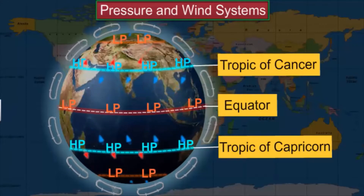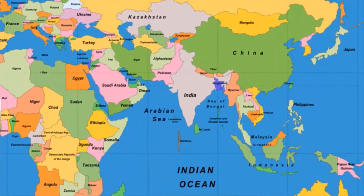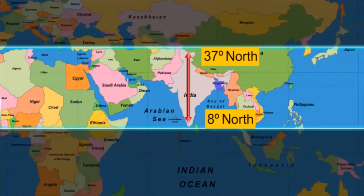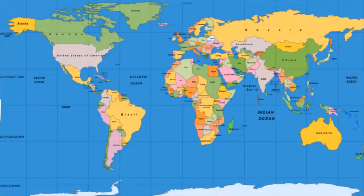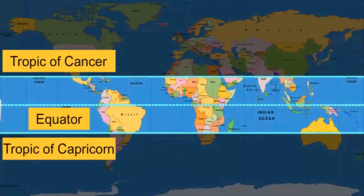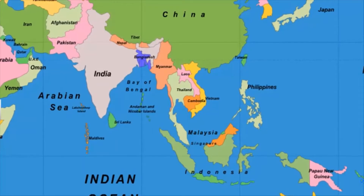India is situated approximately between 8 degrees north and 37 degrees north latitude. It falls under the tropical region, which is the belt between the two tropics. Predominantly, the climate of places located in the tropical region is hot and humid. Tropical climate is found mainly in South and Southeast Asia.